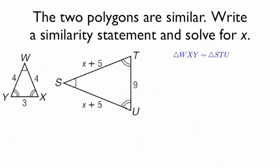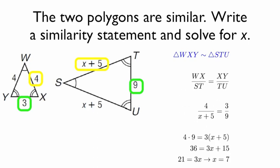Here we know that the polygons are similar. Write a similarity statement and solve for x. We know that triangle WXY would be similar to STU, and we want to solve for x. Since we have two isosceles triangles, we only need to solve for one of the x's. ST corresponds with WX. In order to create proportions, we need a known ratio where both lengths are known. We know 3 and 9 are corresponding sides, so WX over ST equals XY over TU. That means 4 over x plus 5 equals 3 over 9, and solving for x gives us that x equals 7.